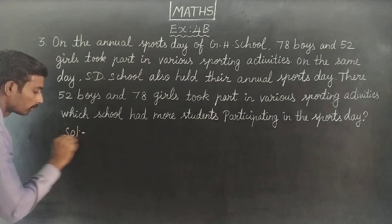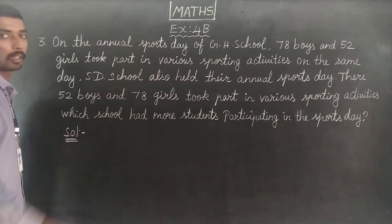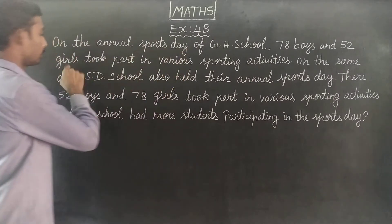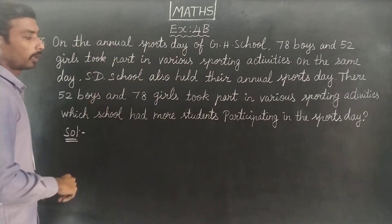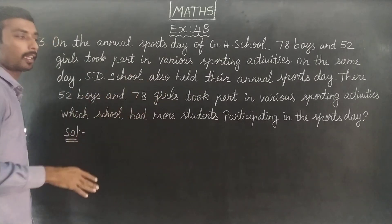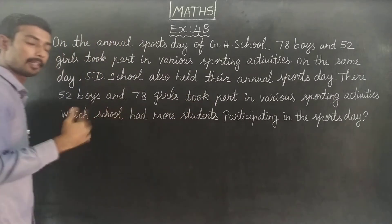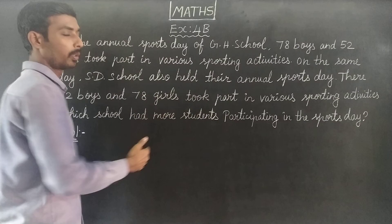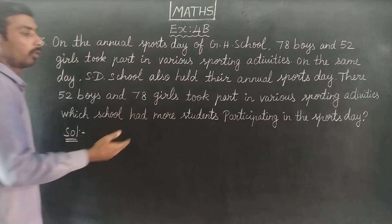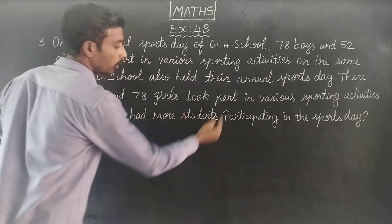Solution. If you look at the boys and girls, the numbers are different between the two schools. In SD school, 52 boys and 78 girls participated. The boys and girls counts are different between the schools, but the students overall are different in distribution only.